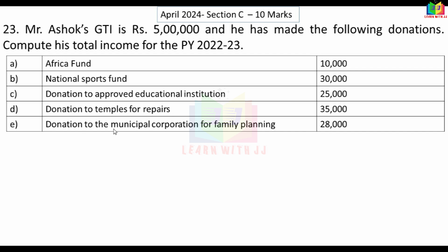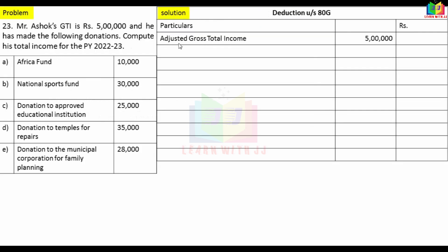Now we can calculate. First, the Africa Fund is 100% deductible. We need to look at the Adjusted Gross Total Income. For List C qualifying, the Adjusted Gross Total Income equals Gross Total Income minus all deductions other than 80G deductions.